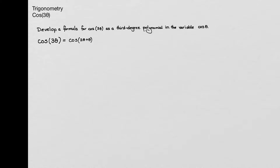Now I'll use that formula for cosine of alpha plus beta, and I know that that's the cosine of alpha, which is in this case 2 theta, times the cosine of beta, which in this case is theta, minus — because it's cosine — the sine of alpha, which is 2 theta, times sine of beta, which is theta.